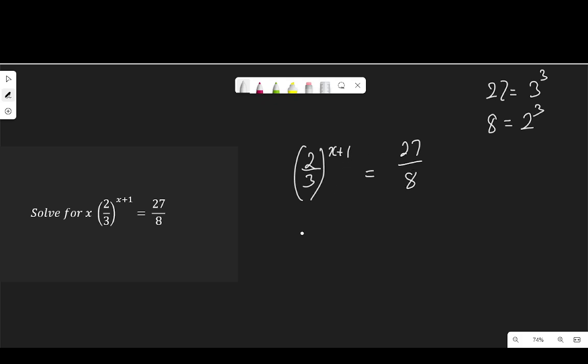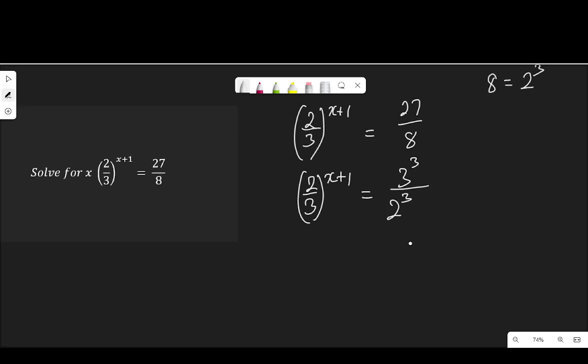That means our exponential equation will become 2 over 3 to the power of x plus 1 equal to 3 to the power of 3 over 2 to the power of 3. The fraction on the right hand side, the numerator and the denominator have the same power. Therefore, I can write this as 2 over 3 to the power of x plus 1 equal to 3 over 2 to the power of 3, since both of them have the same power. So I can raise the fraction to the power of 3.